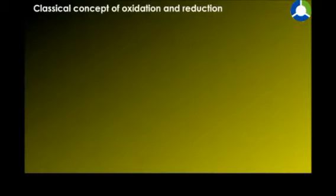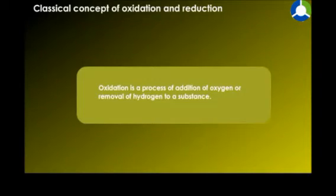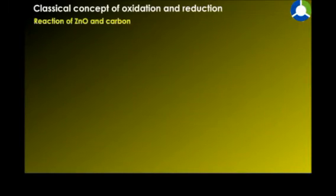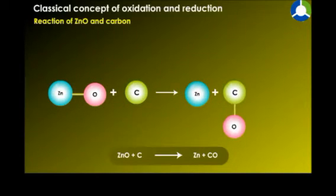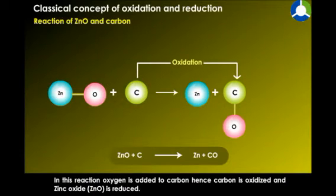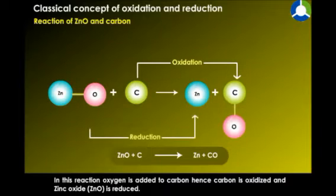Oxidation is a process of addition of oxygen or removal of hydrogen to a substance. For example: ZnO + C → Zn + CO. In this reaction, oxygen is added to carbon, hence carbon is oxidized and zinc oxide is reduced.